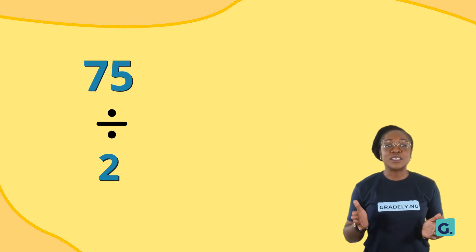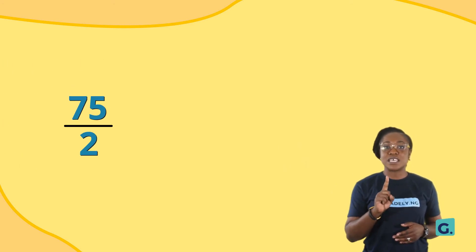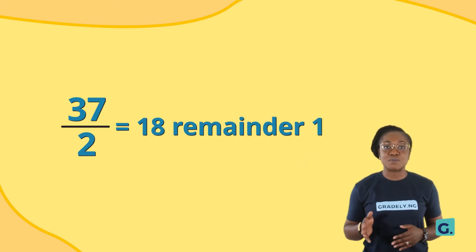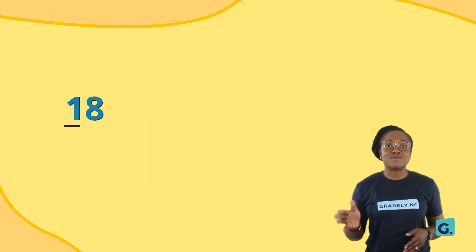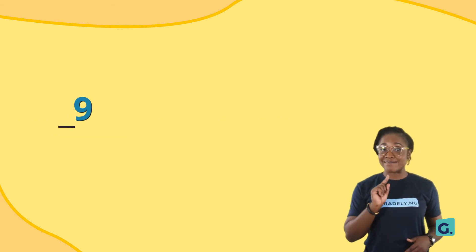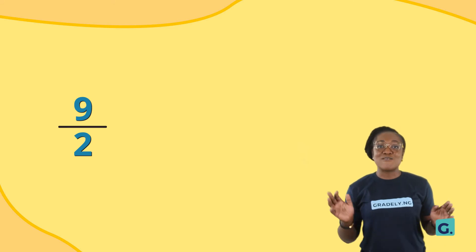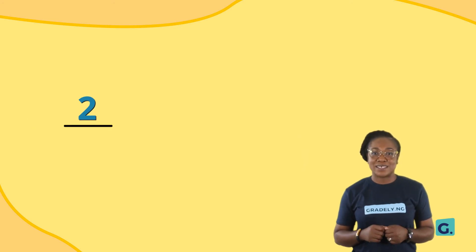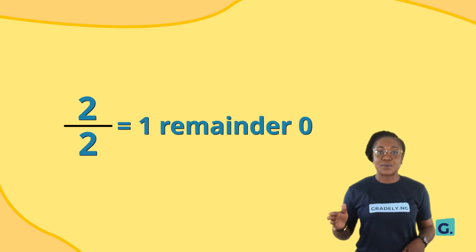To convert 75 base 10 to base 2, simply divide 75 by 2 and record the remainders. 75 divided by 2 is 37 remainder 1. 37 divided by 2 is 18 remainder 1. 18 divided by 2 is 9 remainder 0. 9 divided by 2 is 4 remainder 1. 4 divided by 2 is 2 remainder 0. 2 divided by 2 is 1 remainder 0.